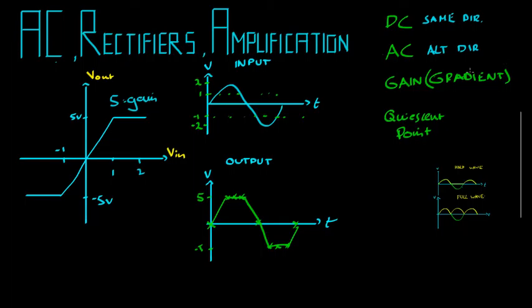The quiescent point is the point that's basically halfway between these flat ends. And here it is at zero, zero. Amplifiers don't have to have their quiescent point at zero, zero. It is equally valid to have an amplifier that looks like this.